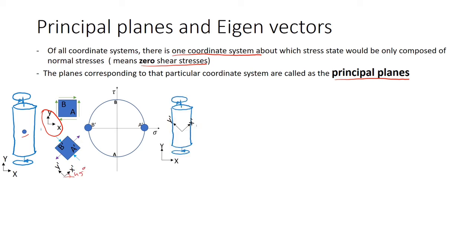To summarize, this is that one coordinate system and these two are the principal planes defined by the two basis vectors of the coordinate system. Principal plane A' is defined by the basis vector X' and B' is defined by Y'.